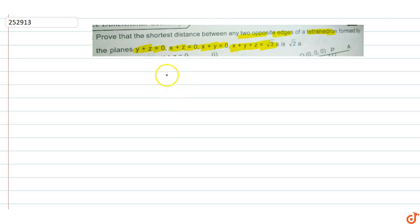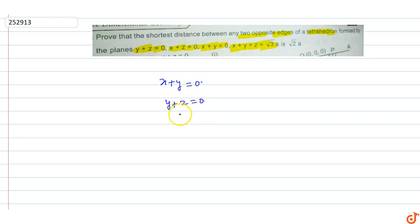Let's consider edge AB as the intersection of the planes x+y=0 and y+z=0. The equation of the line containing edge AB is found by solving these two plane equations simultaneously.